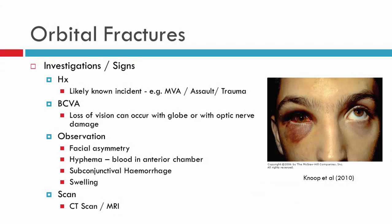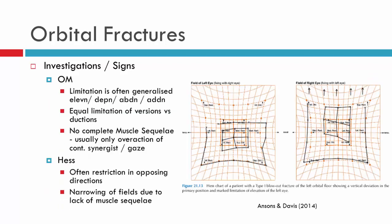The CT scan is considered best for looking at bony fractures and determining whether there is entrapment of muscles. Ocular movements in an orbital fracture generally cause a generalised limitation — so you'll usually see all of elevation be affected rather than levo-elevation alone, and similarly all of depression, or perhaps abduction or adduction.